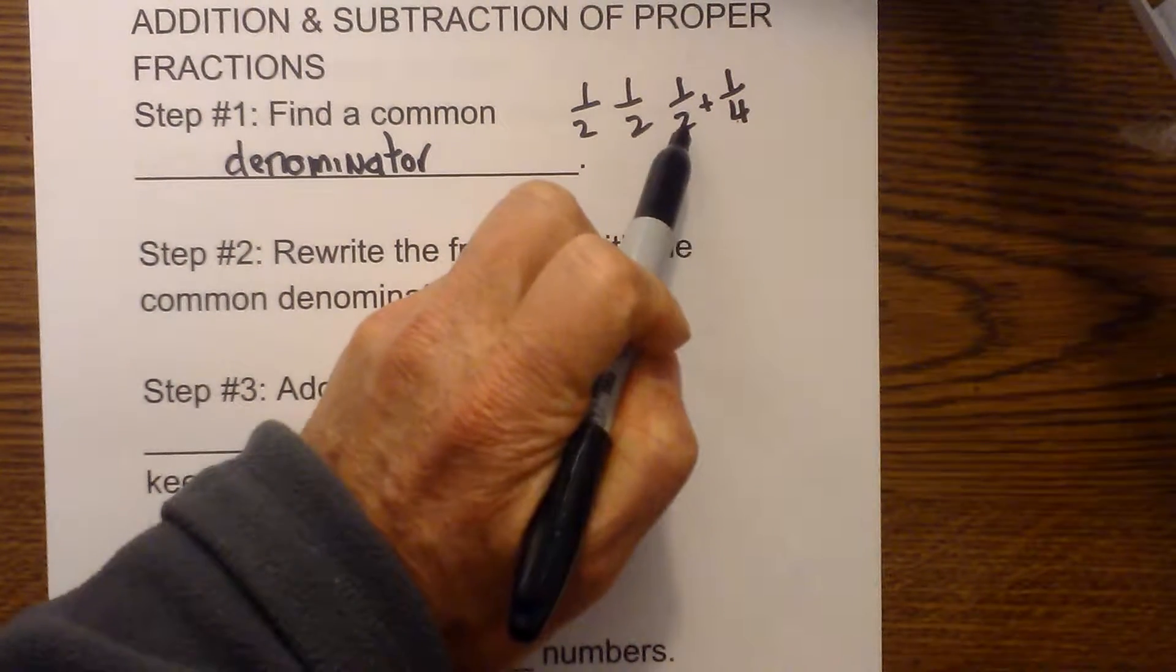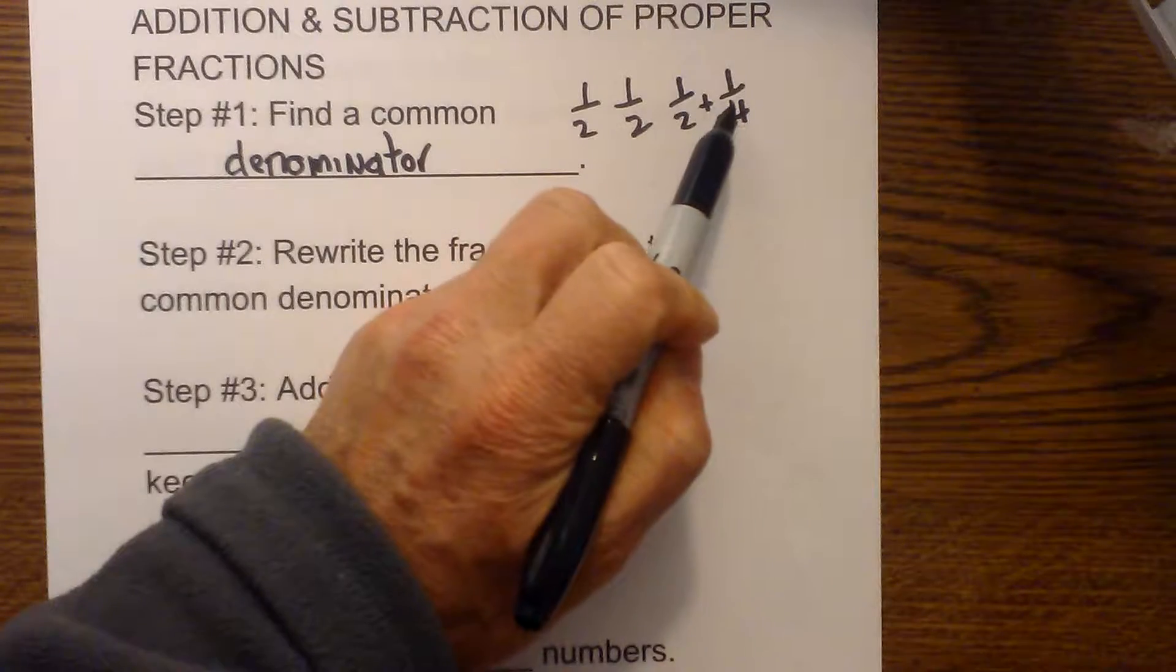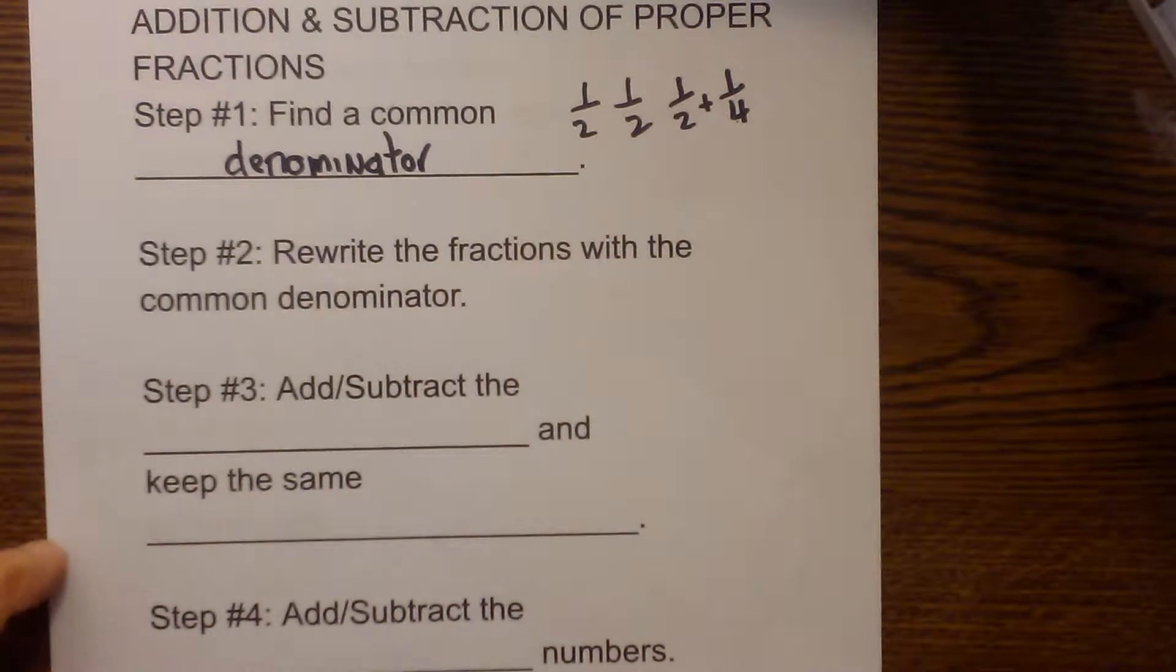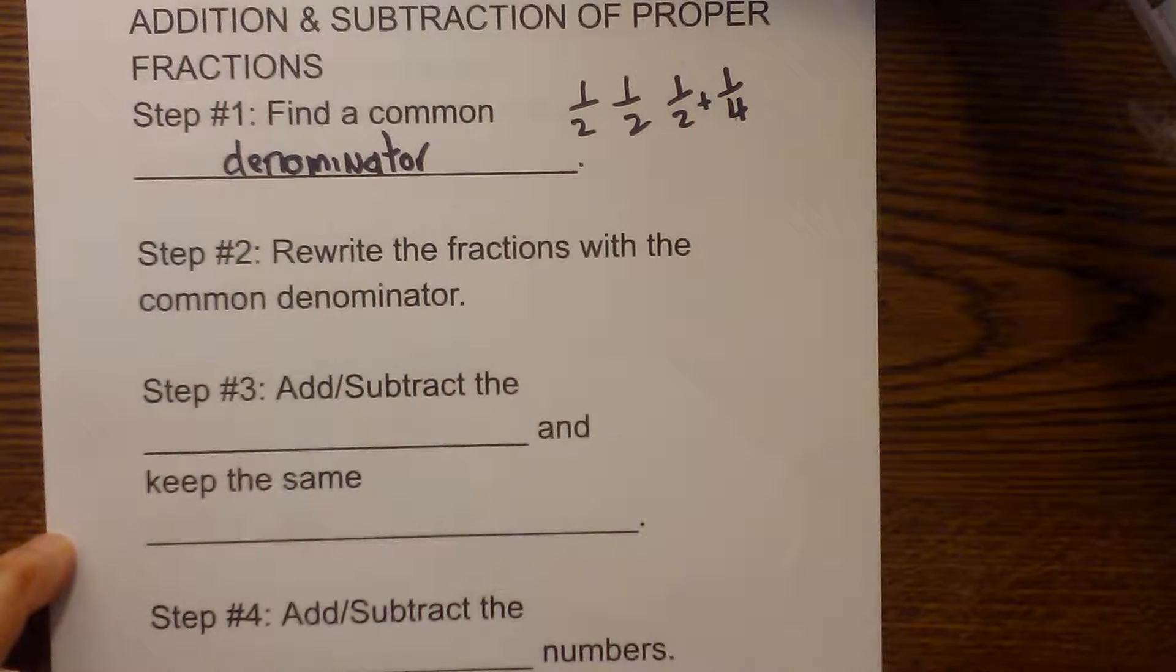In this case, I know that both of them will go into four. Two will go into four and four will go into four. So you would have to find a common denominator and I'll work more examples with that.